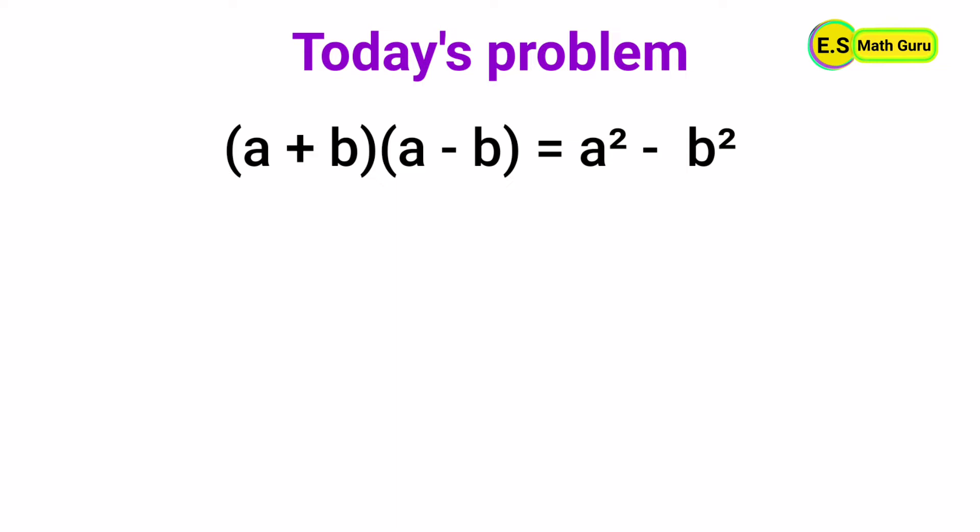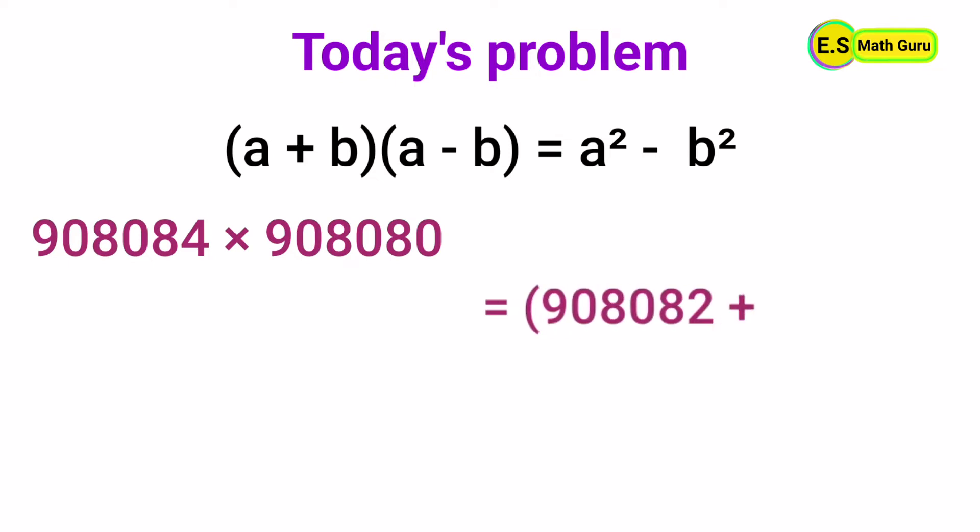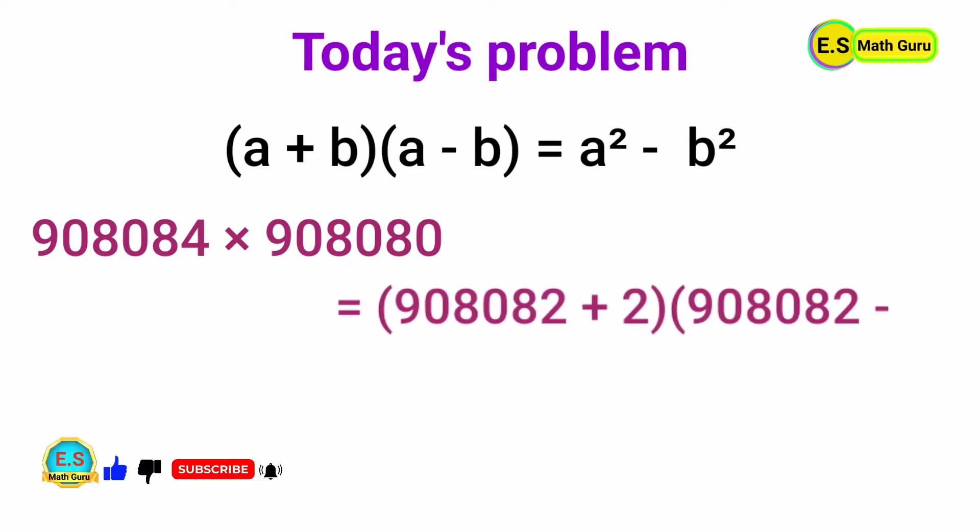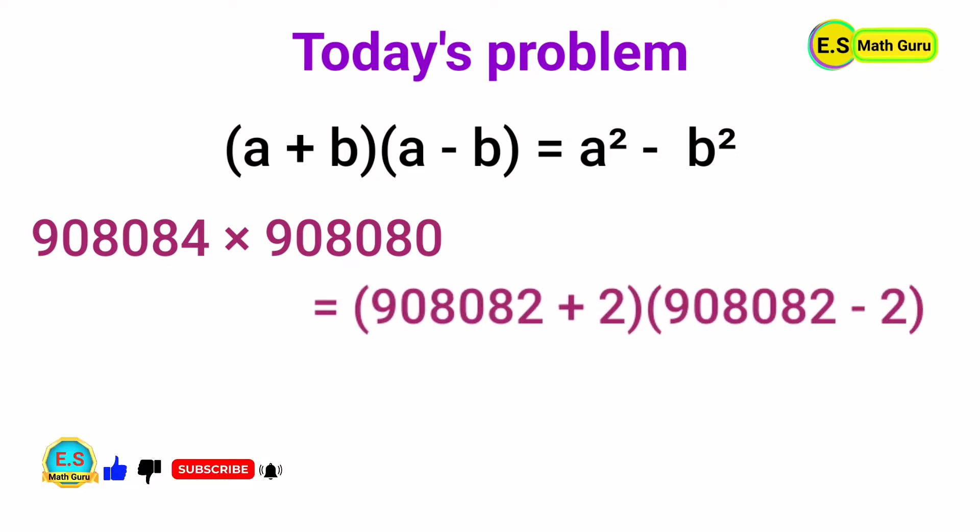First, let us split the two numbers: 908,084 can be written as 908,082 plus 2, and 908,080 as 908,082 minus 2, to get in the form of a plus b times a minus b.